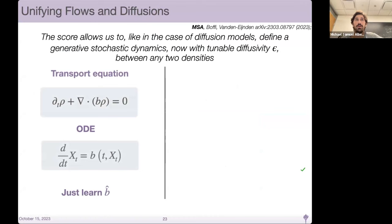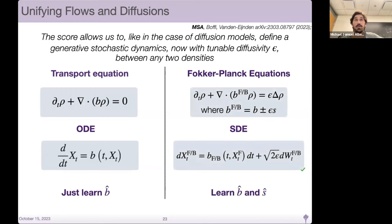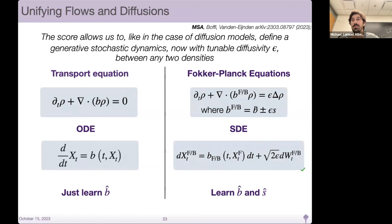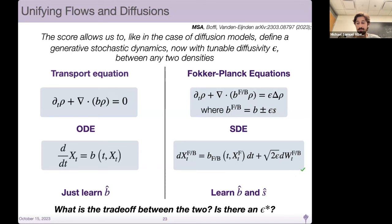Why would you want to learn the score and use an SDE? The score allows us to define a generative model on stochastic dynamics with tunable diffusivity epsilon. The stochastic dynamics have this additional term epsilon, and we can do this between any two densities. Nick Boffey had this nice idea: if you want to bound the KL divergence between your model's push forward and the true push forward, matching the b's via ODE does not actually bound the KL because the Fisher divergence is still uncontrolled by small error in b_hat minus b.